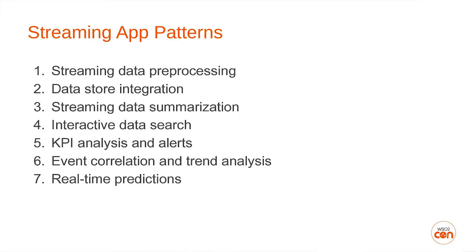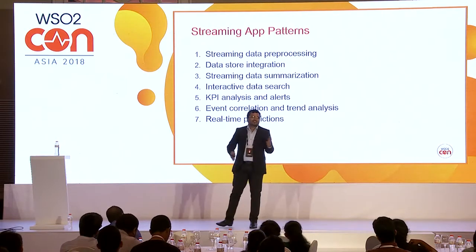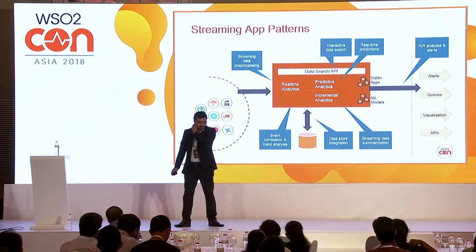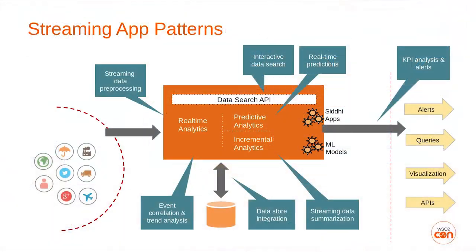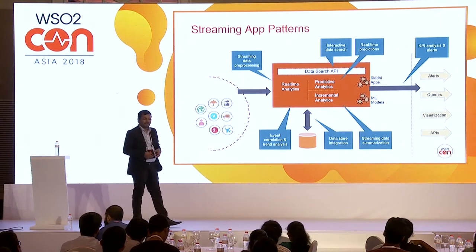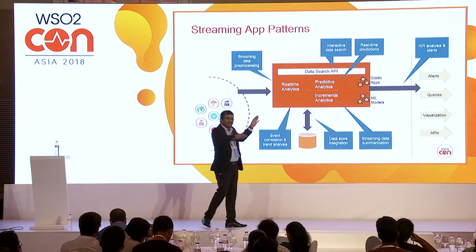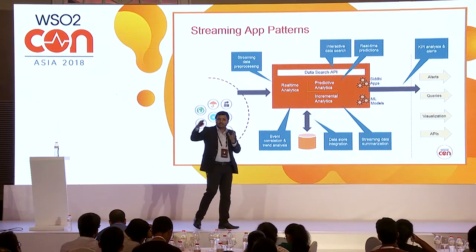The common patterns we'll discuss are identified from our experience working with different customers on different projects — they are not a fixed documented set. In a complete end-to-end event flow, we receive events from different sensors, process them, and send alerts. Patterns like streaming data pre-processing, real-time predictions, KPI analytics, and data store integration are applied at different phases of the analytics pipeline.